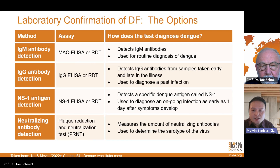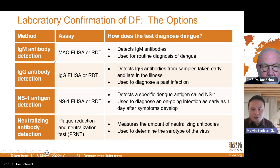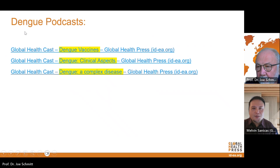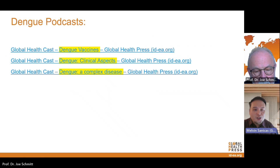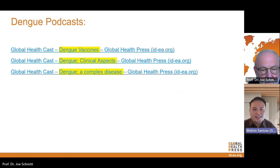Neutralization tests, or the PRNT, are used to measure neutralizing antibodies and determine the serotype of the virus, though these are not routinely used. We also have different dengue podcasts available — the long versions discussing dengue vaccines with Professor Tino Swartz, clinical aspects with Professor Leong Ho Nam, and dengue as a complex disease with Professor Marco Safadi.